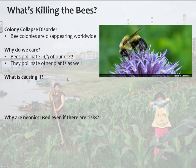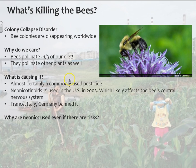What's causing colony collapse disorder? It's almost certainly a commonly used pesticide called neonicotinoids, first used in the U.S. in 2003. This pesticide is designed to kill bugs, and they're finding that neonics likely affect the bee's central nervous system — they get confused and disoriented and so forth.